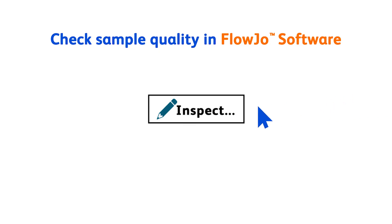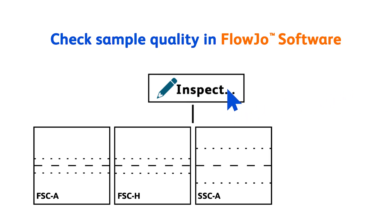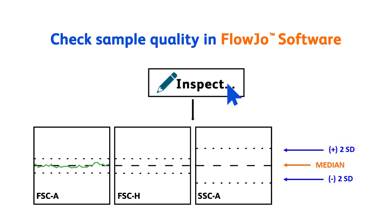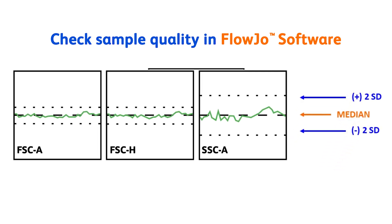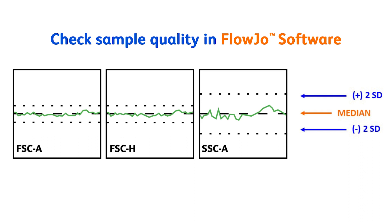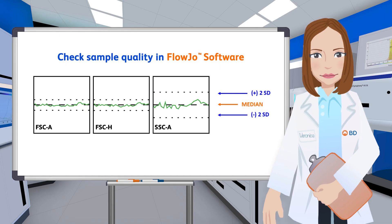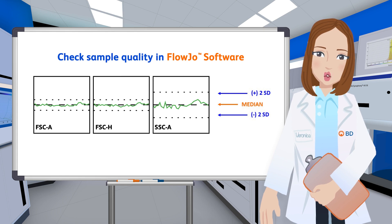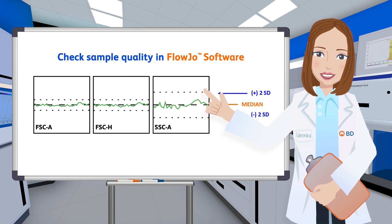Flow Joe software is equipped with a variety of tools to help you inspect and perform quality control on your data. Selecting a sample and clicking the inspect button will show the median light intensity values for each parameter plotted over time. The dotted lines on each plot delineate an ideal boundary of two standard deviations away from the median.